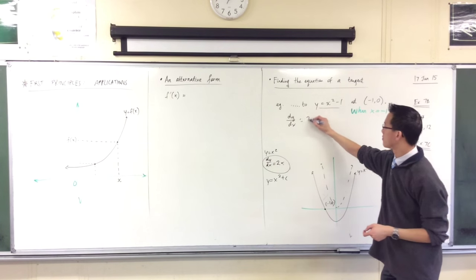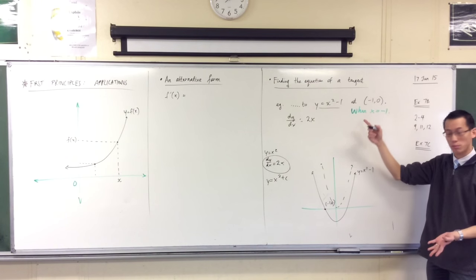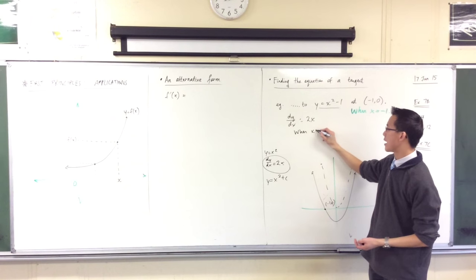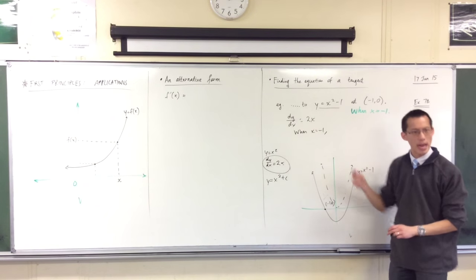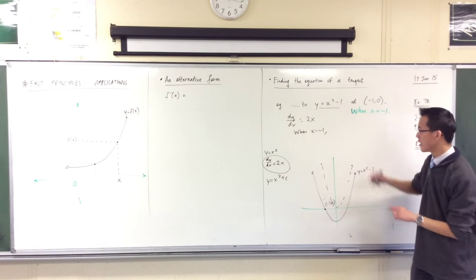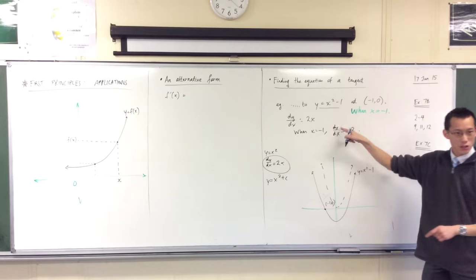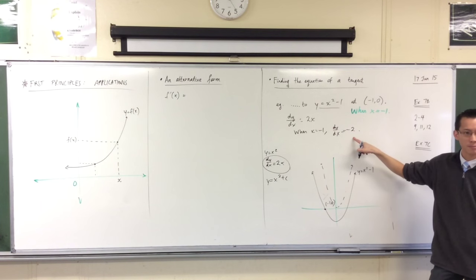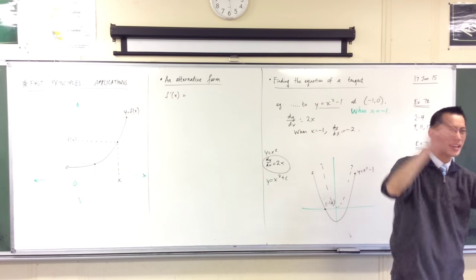So once you have that, all you need to do is take the actual x value they've supplied you. So I would say when x equals minus 1, please don't skimp on that line, by the way. I know a lot of you are like, that's what I have to do. So I'm just going to say dy/dx equals negative 2. You go straight from this line to this line. Bad idea.